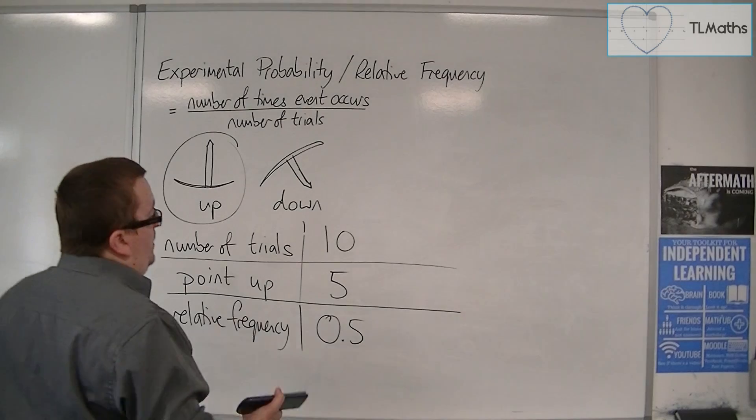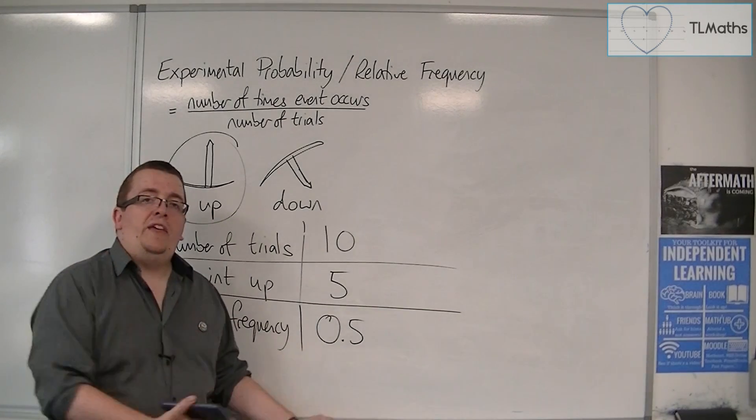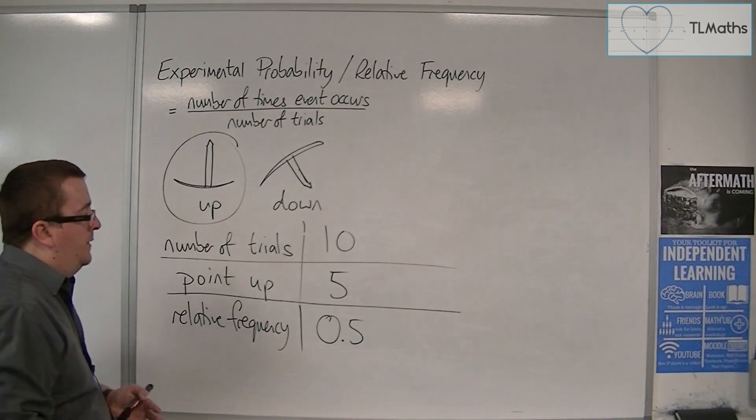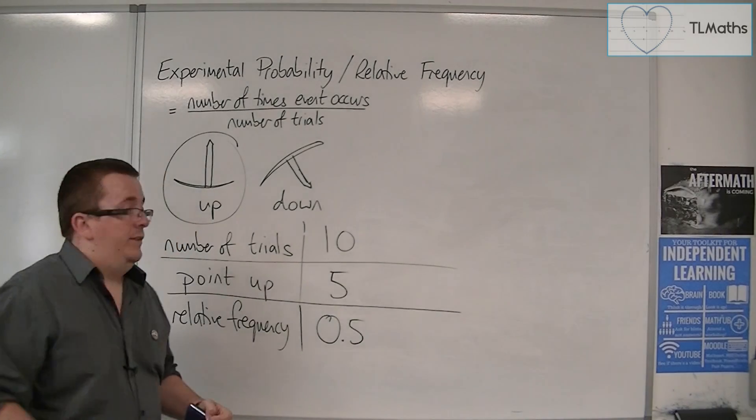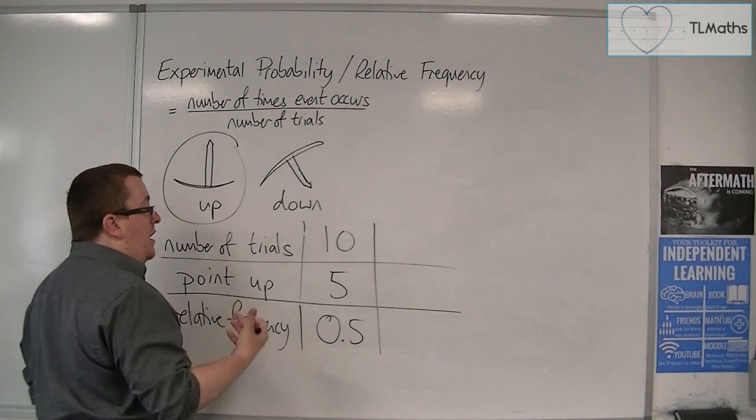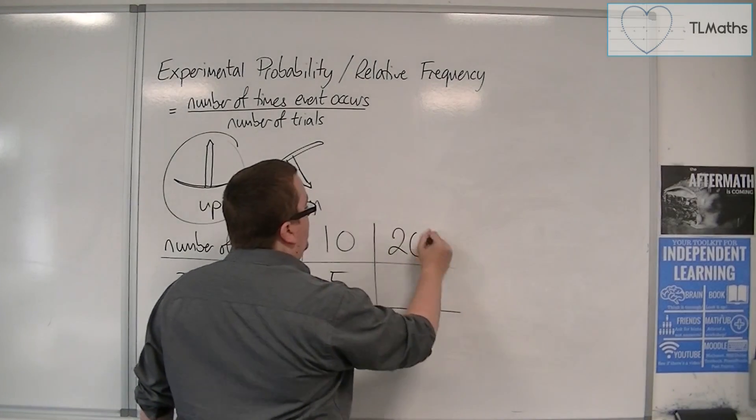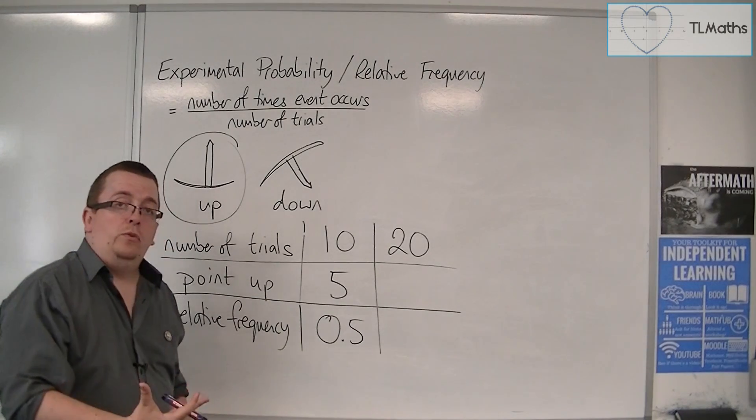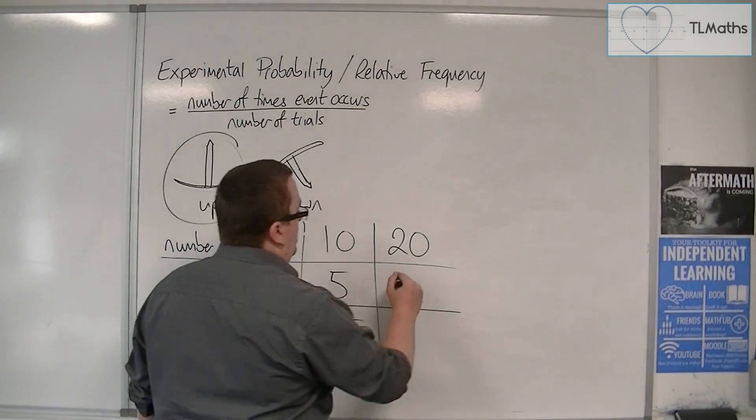Now, what we would then do is we'd decide, well, is that enough trials? Has that told the whole story? Well, maybe it hasn't. Maybe I go on and do another ten trials. So, now I've done 20 trials. And, overall, it has now been point up 12 times.